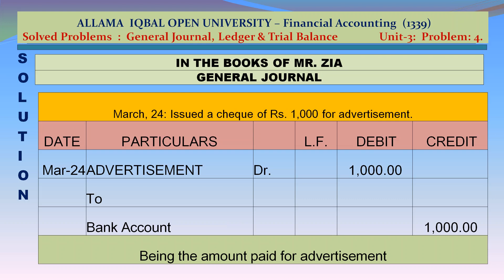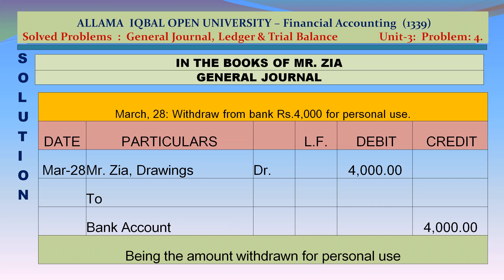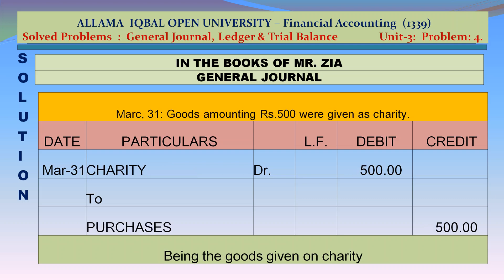March 24: Advertisement account debit Rs 1,000 to bank account credit Rs 1,000 — being the amount paid for advertisement. March 28: Mr. Jia drawings account debit Rs 4,000 to bank account credit Rs 4,000 — being the amount withdrawn for personal use. March 31: Charity account debit Rs 500 to purchases account credit Rs 500 — being the goods given as charity.